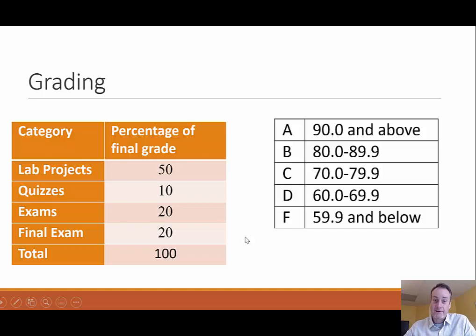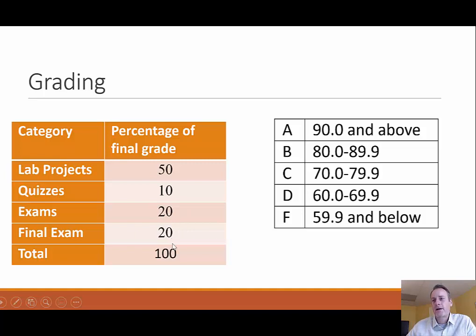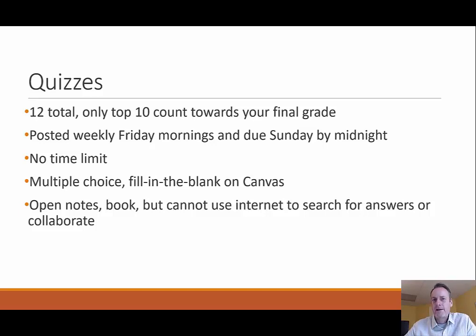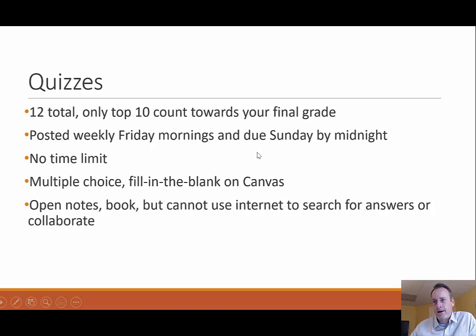As far as grading for the class, it's heavily lab-based. 50% of your grade will be on lab projects that you submit. 10% on quizzes — there will be a weekly quiz. 20% on exams — there are two midterm exams — and 20% on a final exam. Standard grading scale: we don't use minuses or pluses in construction management, so just A, B, C, D, F. There's no time limit on quizzes and they're multiple choice. They'll be posted every Friday morning and due Sunday by midnight — all through Canvas. You'll know your score right away.